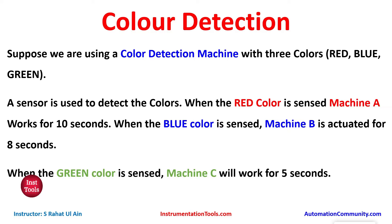We are using a color detection machine with three colors: red, blue, and green. This machine will detect those colors using a sensor. When the red color is sensed, machine A works for 10 seconds. When the blue color is sensed, machine B is actuated for 8 seconds. When the green color is sensed, machine C will work for 5 seconds.